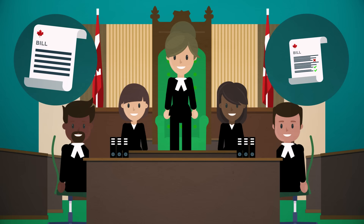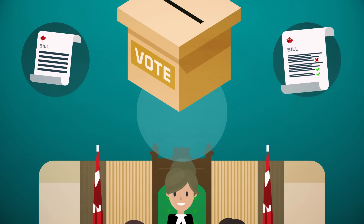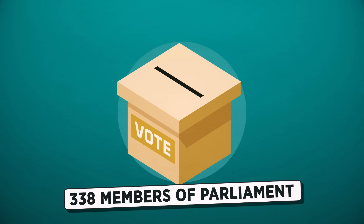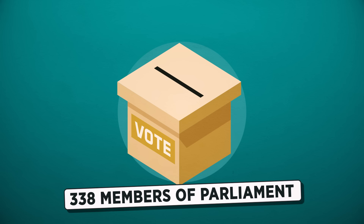The House of Commons proposes, debates, reviews, and passes bills. This is where most new laws start their journey. Members of Parliament in the House of Commons are elected by Canadians, like you. Each member of Parliament represents a specific area of the country called a constituency, or riding.